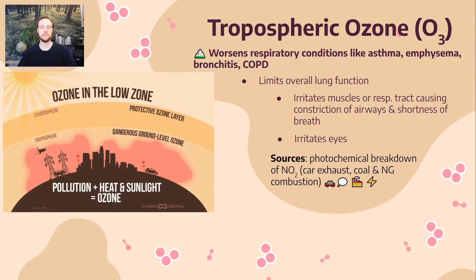Looking at sources of ozone and routes of exposure, it primarily comes from NO2 emissions. Nitrogen dioxide (NO2) is emitted by vehicle exhaust and coal-fired power plants especially. It combines with sunlight, which knocks off one of the oxygen atoms from NO2. That free oxygen atom then combines with O2 — molecular oxygen in the atmosphere — to produce O3, which is ozone. So it's NO2 plus sunlight, not simply 'pollution plus heat and sunlight' as some diagrams suggest.